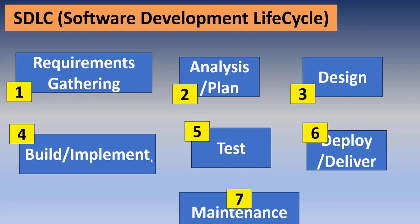So now we have the different phases of the software development life cycle: Requirements Gathering, Analysis, Design, Build, Test, Deploy or Deliver, and Maintenance. These are all the different phases to complete one entire software — build, deliver, and handover.